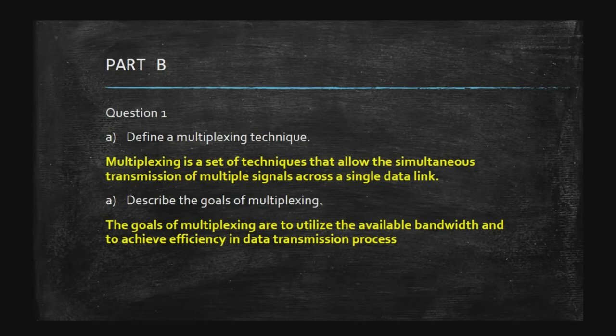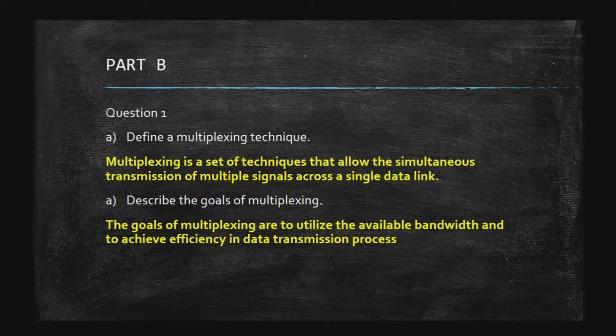Part B is short answer. Question number one asks you to define a multiplexing technique. Multiplexing is a set of techniques that allow the simultaneous transmission of multiple signals across a single data link. That is the definition — multiplexing means you have multiple resources that you can share over a single link when you want to transmit a stream of data.